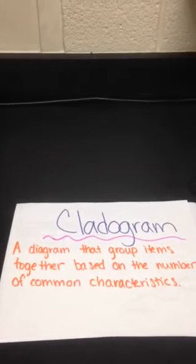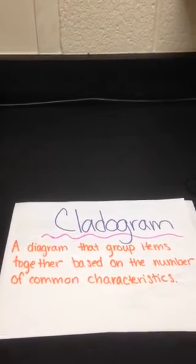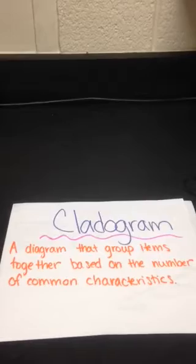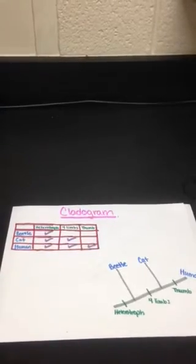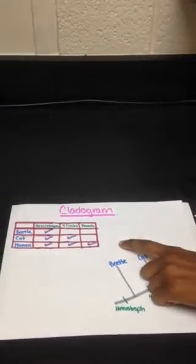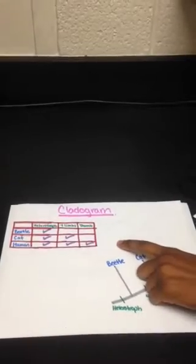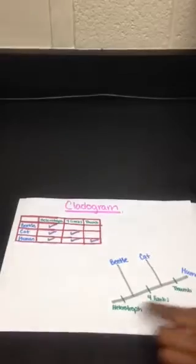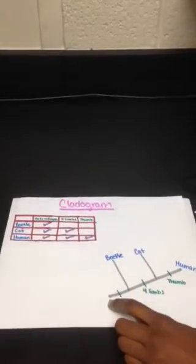A cladogram is a diagram that groups items together based on the number of common characteristics. In the data table here, I have a list of characteristics to go with the beetle, cat, and human. On the cladogram, the one with the most characteristics goes at the end, and the one with the least goes at the beginning.